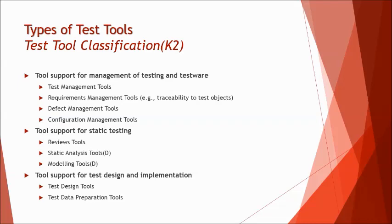The next category is tool support for static testing. Static testing involves looking at requirements, documentation, work products, design, and code — all reviewed before executing them practically. We have review tools, static analysis tools, and modeling tools for UML, control flow diagrams, or business models. The 'D' here represents that a tool is specially meant for developers or generally used by developers, while other tools can be used by anyone. This 'D' designation is important for exam questions — they may ask which tool is specially meant for developers. Don't expect the 'D' representation to appear in the exam itself, as that would be too obvious a hint.